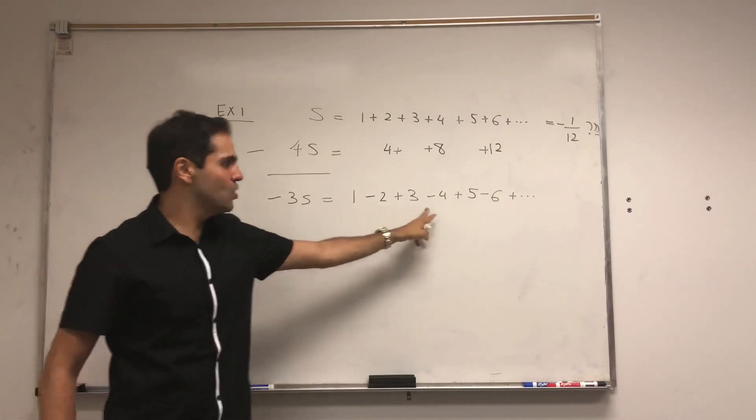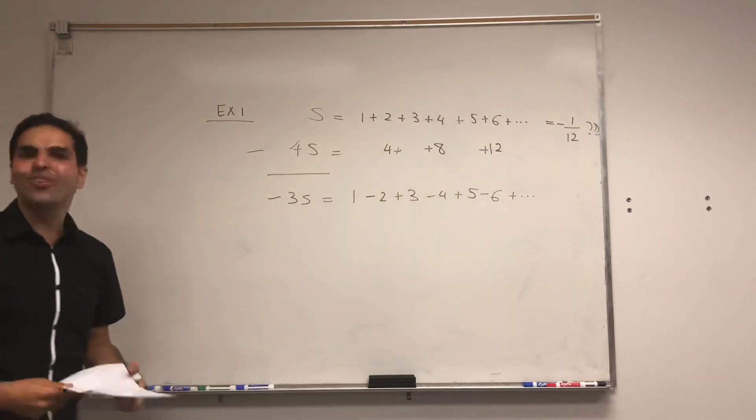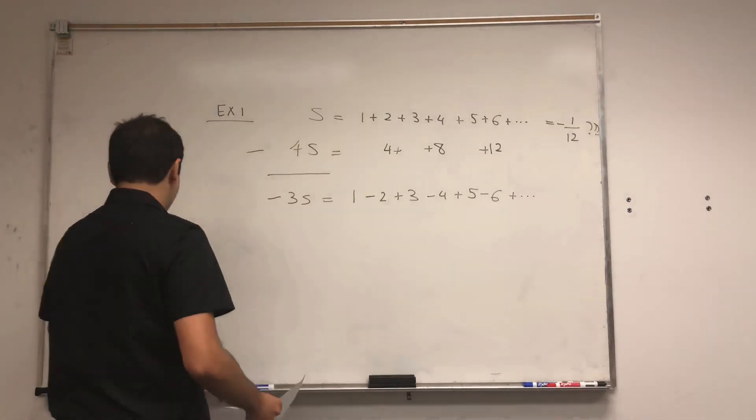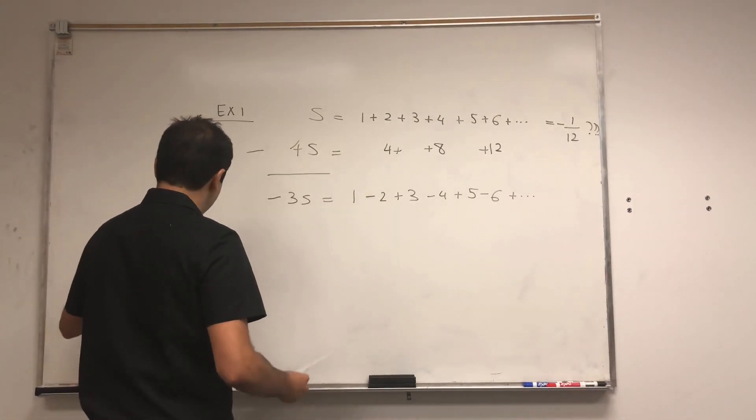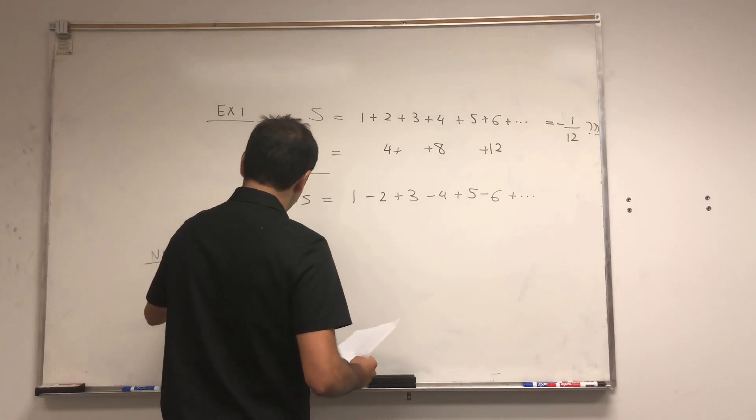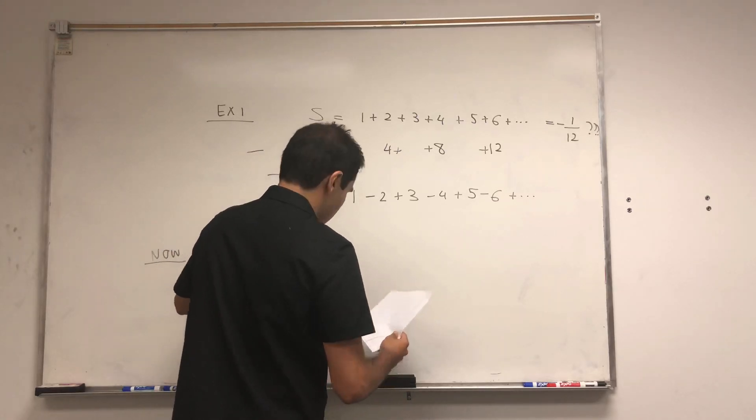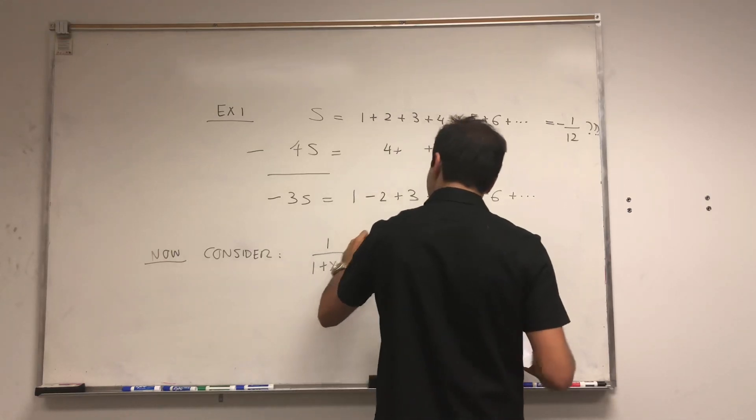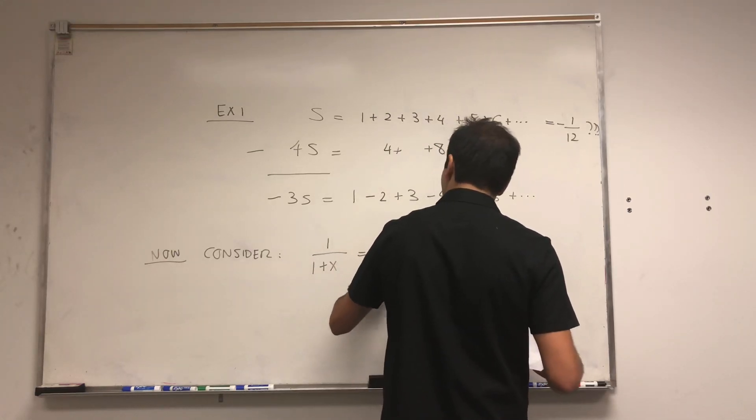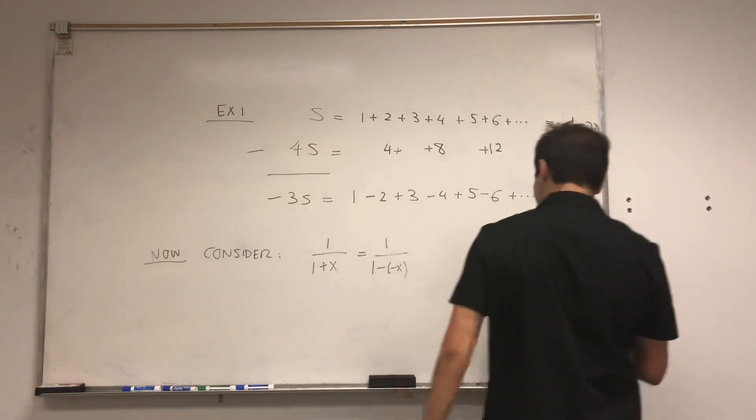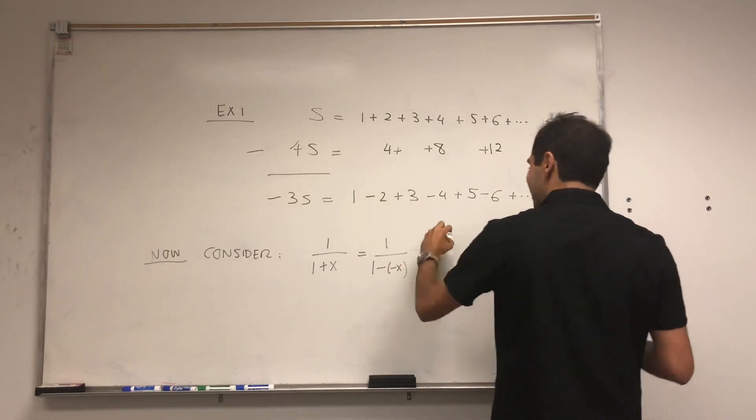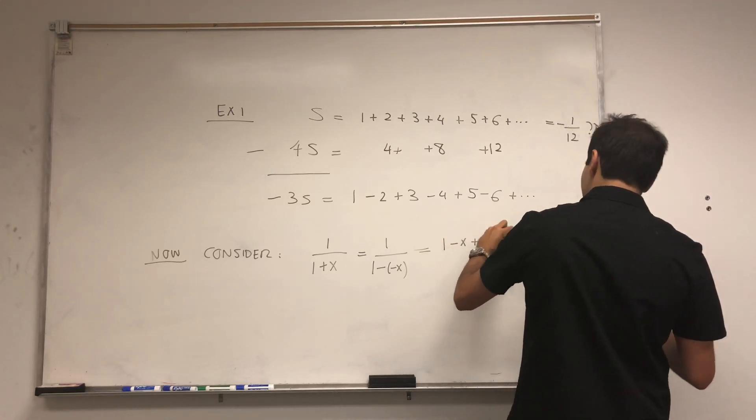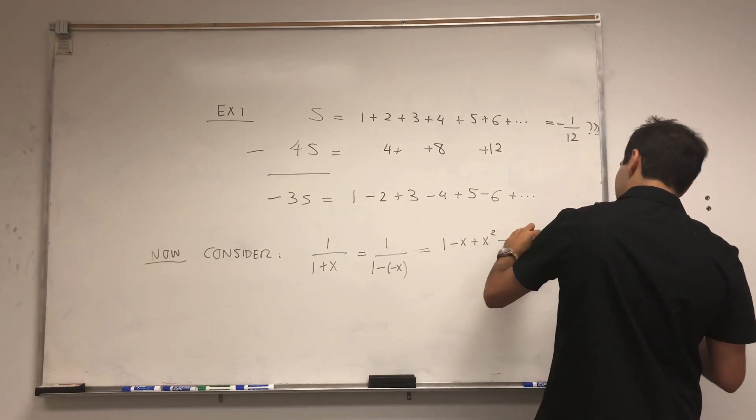And I want to show you that this equals to minus 1 fourth or something. So now let's deal with power series. Now consider the following. Consider the power series of 1 over 1 plus x, which is 1 over 1 minus minus x, which again just becomes a geometric series. 1 minus x plus x squared minus x cubed, etc.